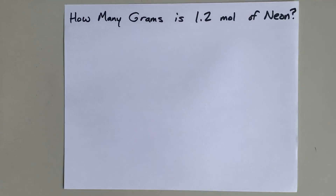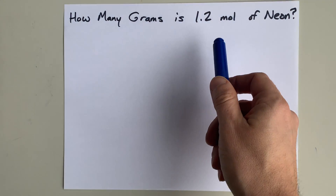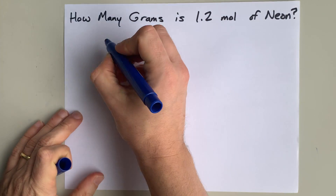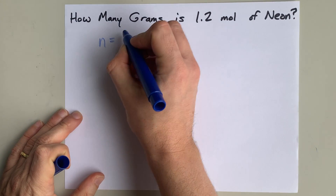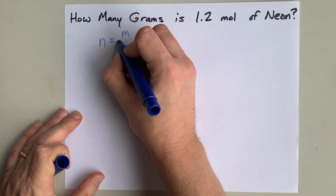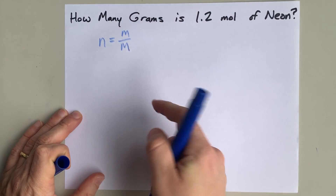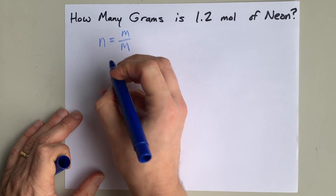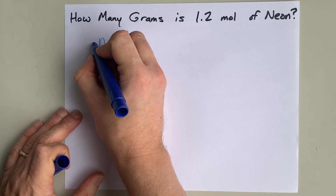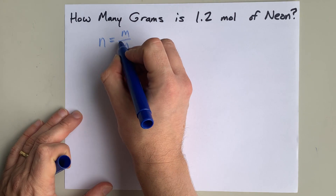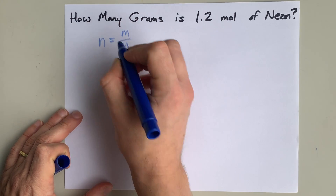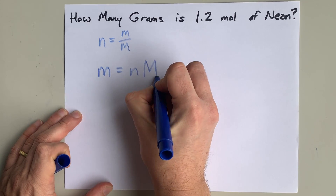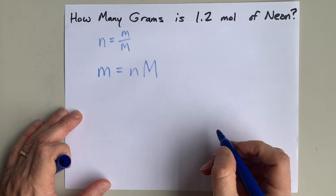How many grams is 1.2 moles of neon? The formula you're familiar with is moles equals mass divided by molar mass. But we were asked for mass in this formula. So, move molar mass to the other side, undoing division by multiplication. The mass is moles times molar mass.